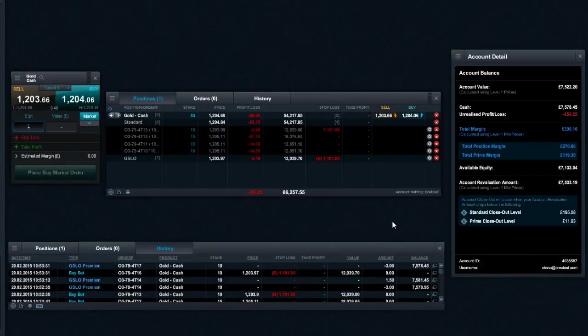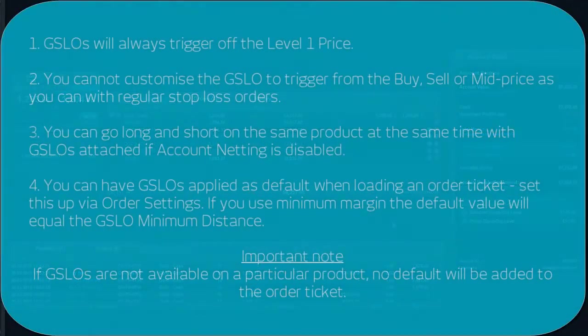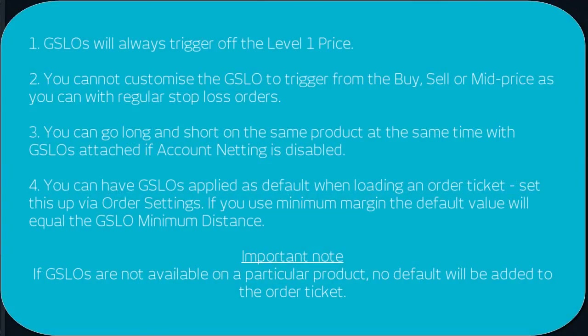Here are some key points to consider when placing GSLOs. GSLOs will always trigger off the level 1 price. You cannot customise the GSLO to trigger from the buy, sell or mid price as you can with regular stop-loss orders. You can go long and short on the same product at the same time with GSLOs attached if the account netting feature is disabled.